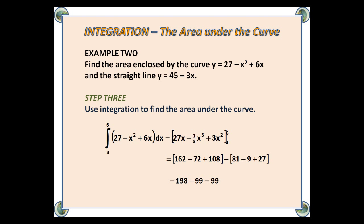Step 3: Use integration to find the area under the curve. So this time we get 27x - ⅓x³ + 3x². And when we stick in our numbers, 6 and 3, we find that the area under the curve is 99.